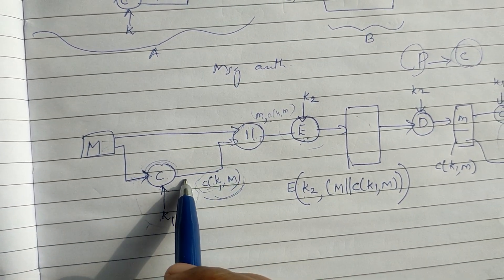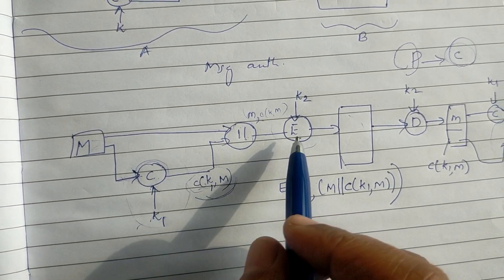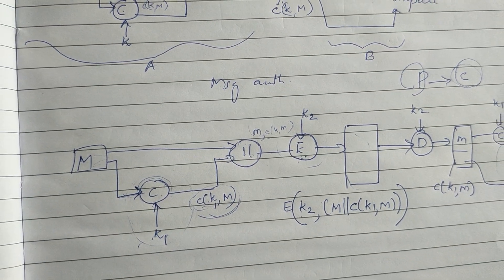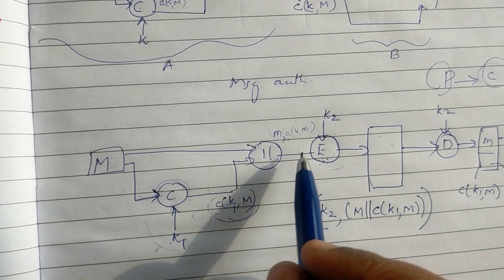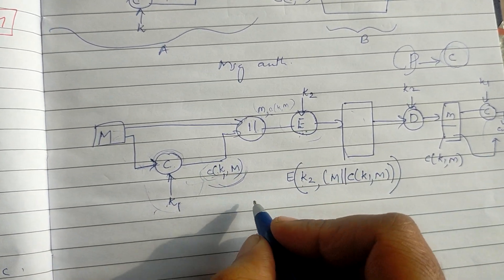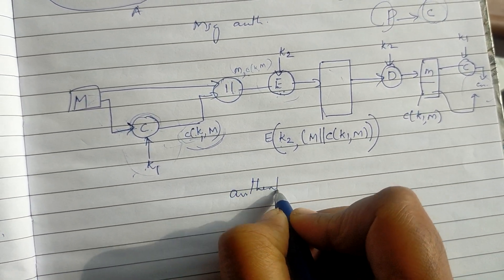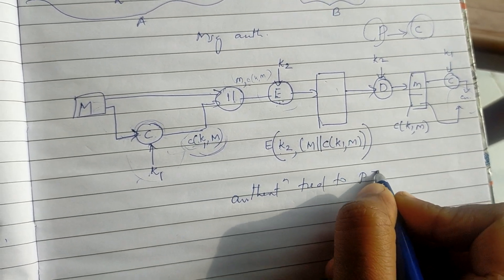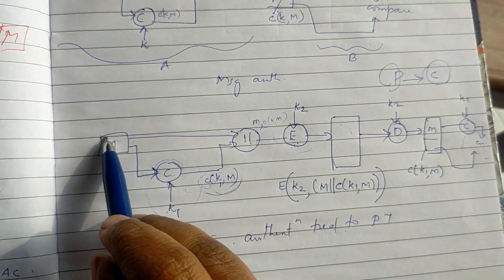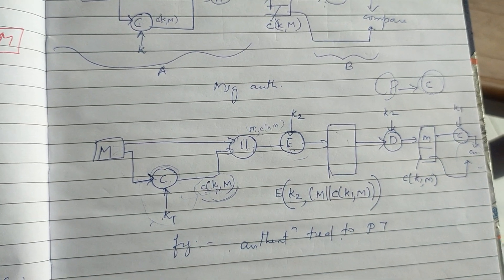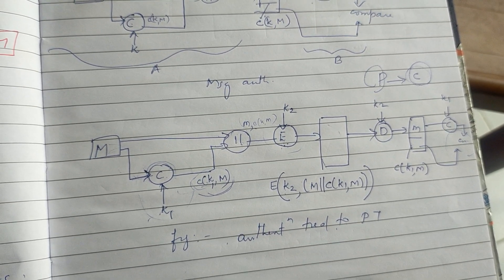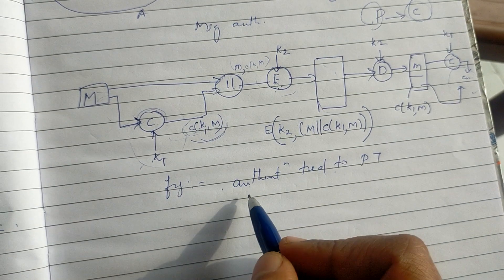Here, authentication is tied to the plain text. So we have confidentiality and authentication. But the authentication is applied to the plain text, not the ciphertext.